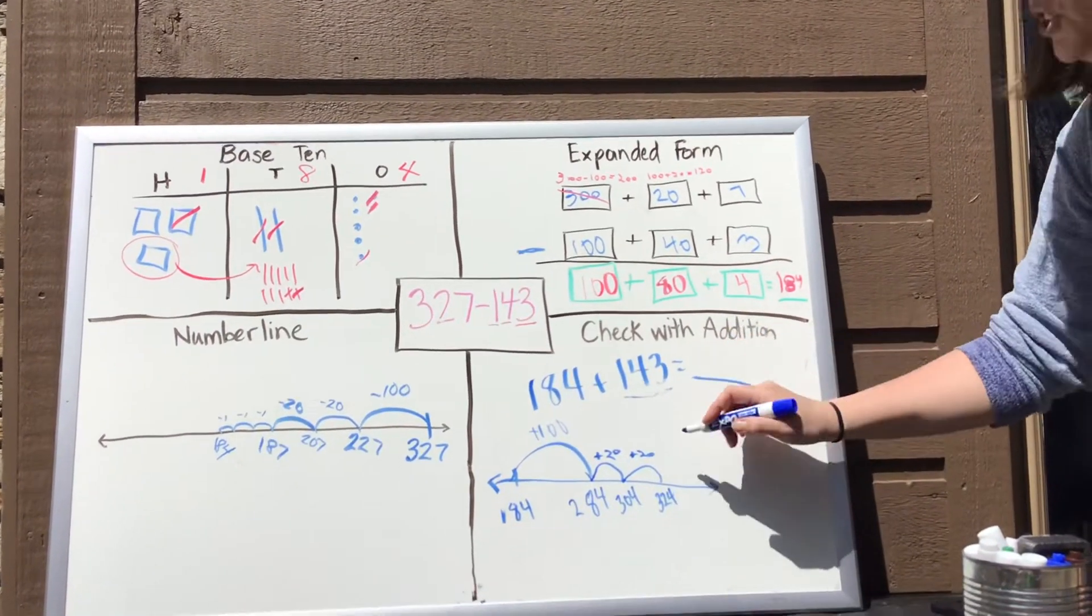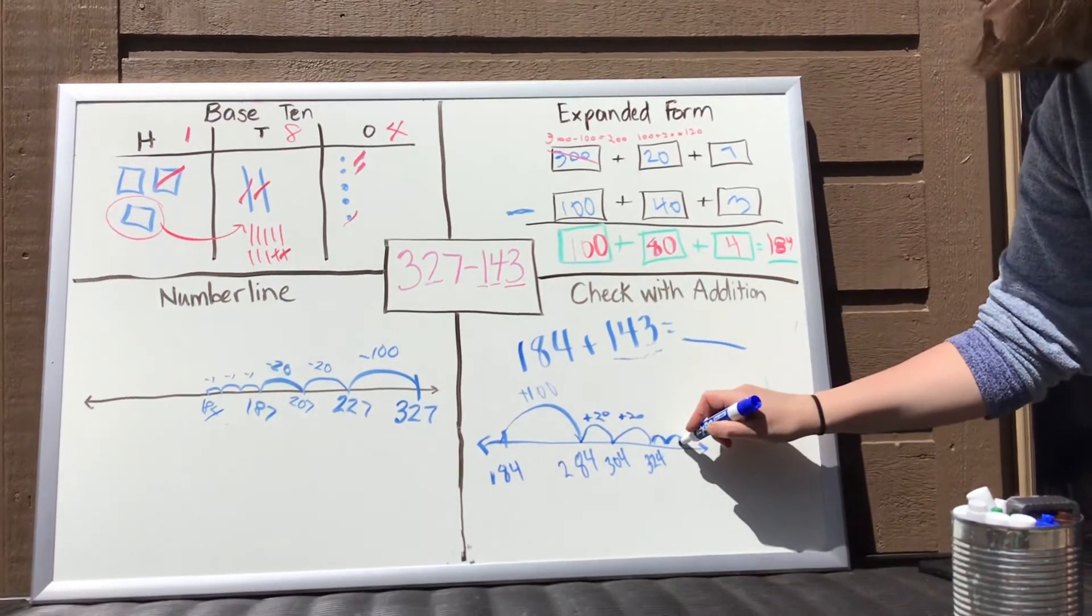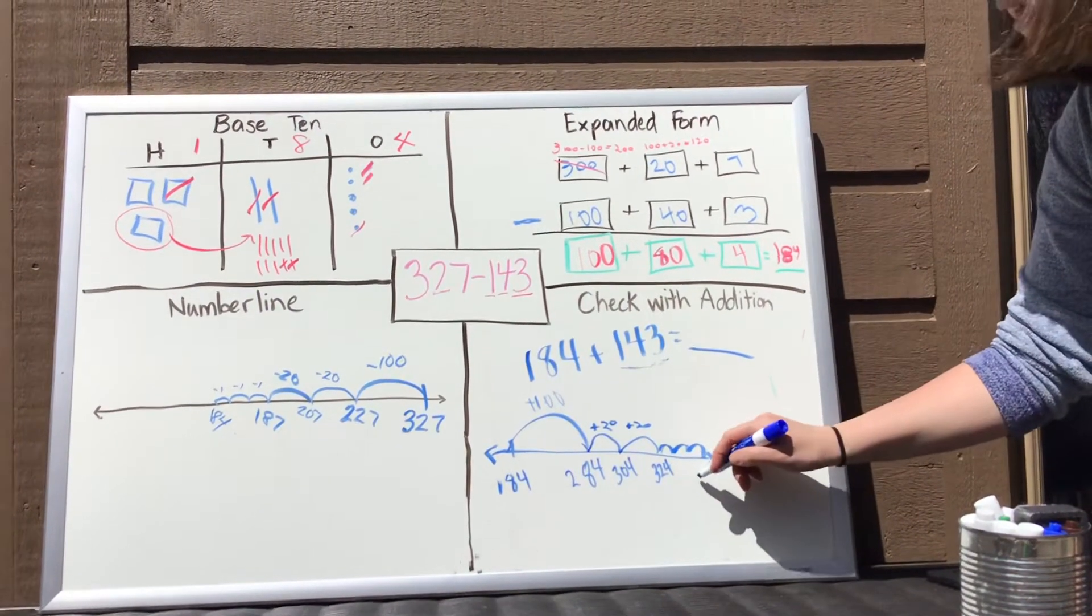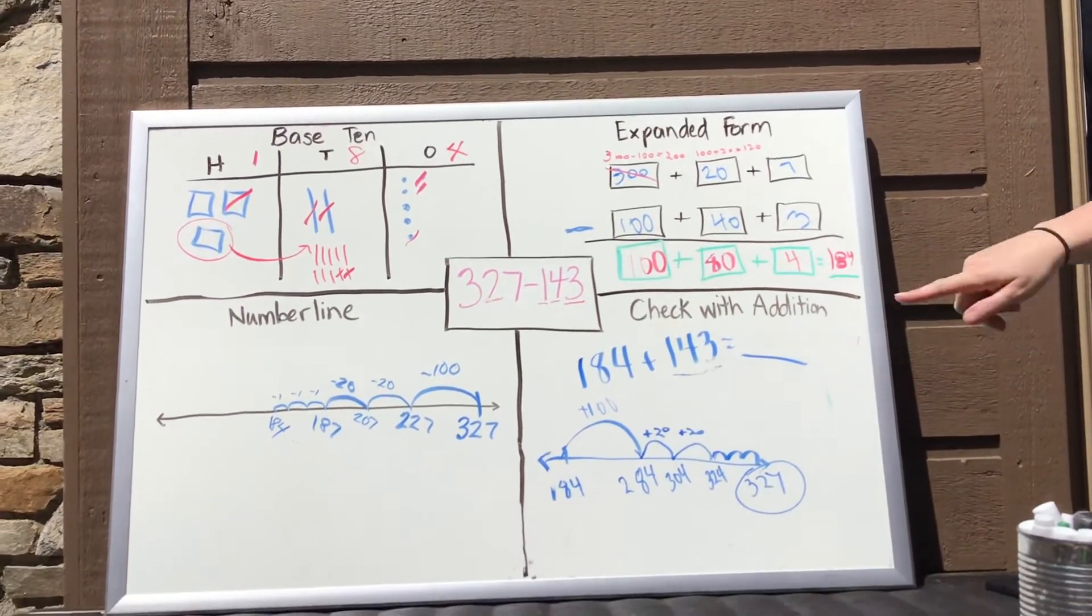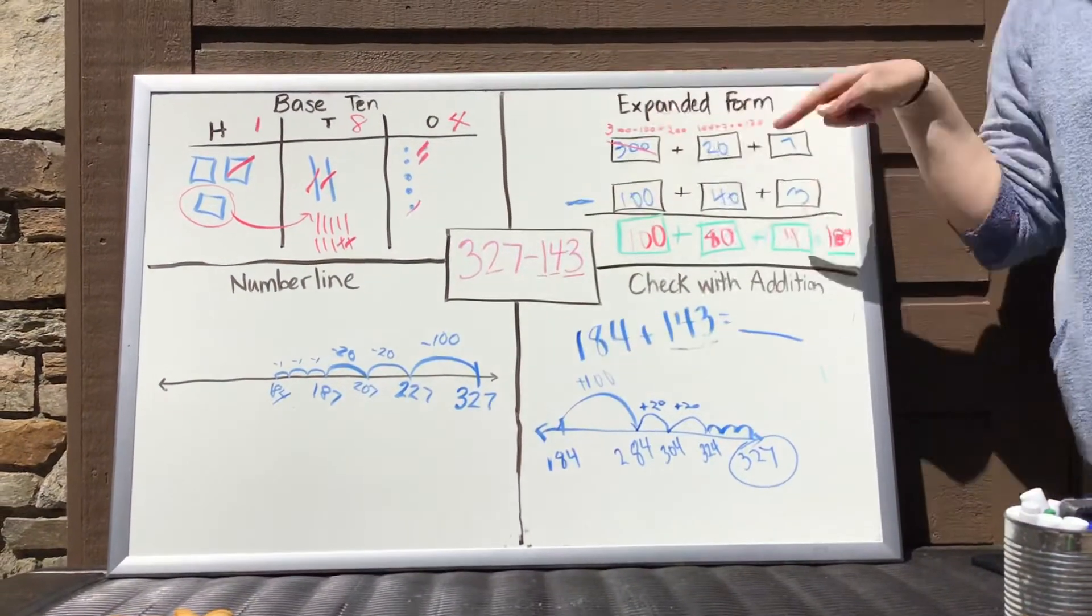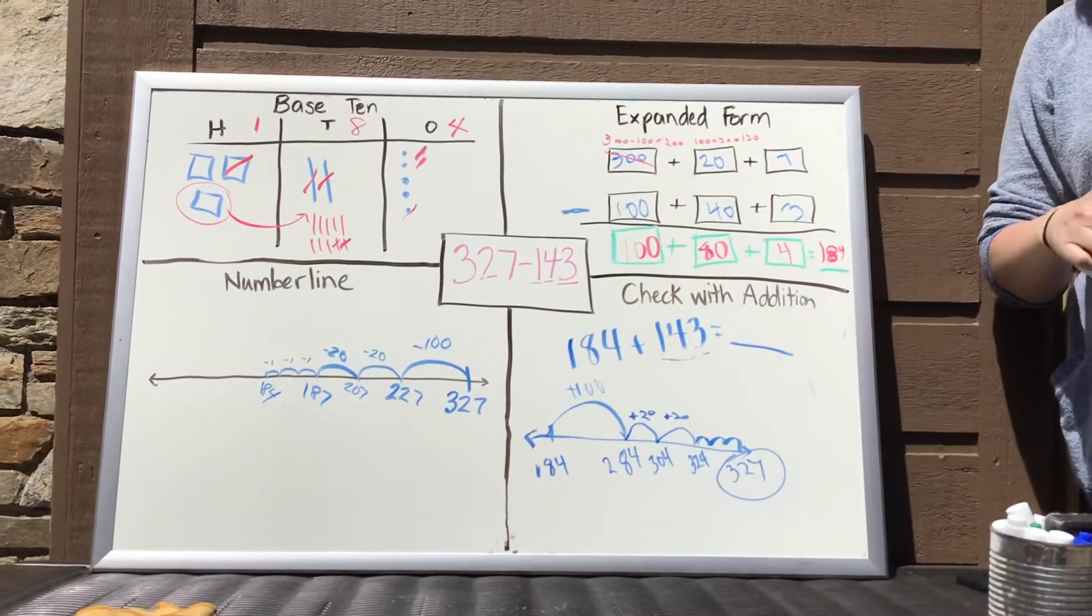And then I just have to do my jumps of one. One, two, three jumps of one. And that's going to get me to 327. So I did it. I solved it correctly in three different ways. And then I checked my work with addition.